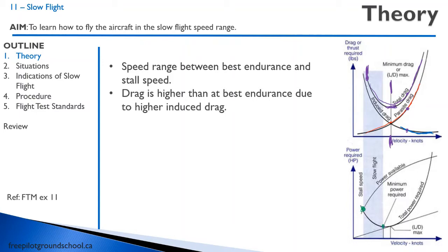So this range here is slow flight, and it's really important that you notice: slow flight is the speed between best endurance and the stall speed. Look at these curves — drag is going to be higher than at best endurance because we have more induced drag.